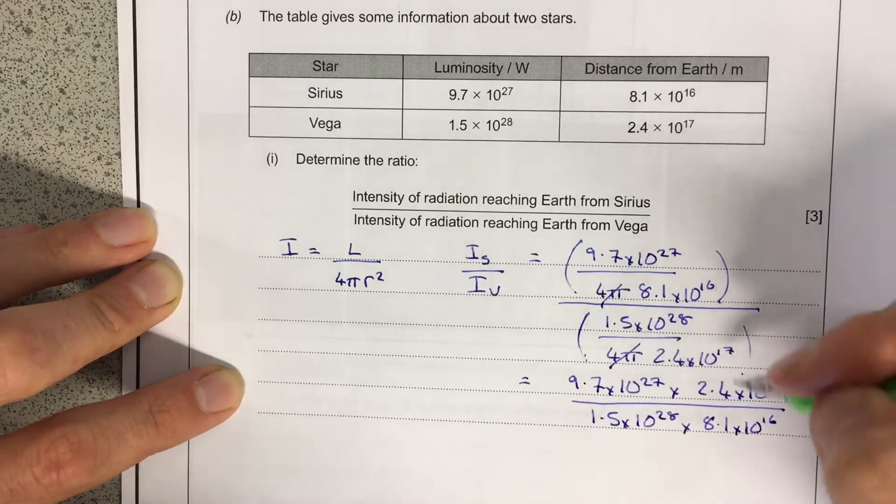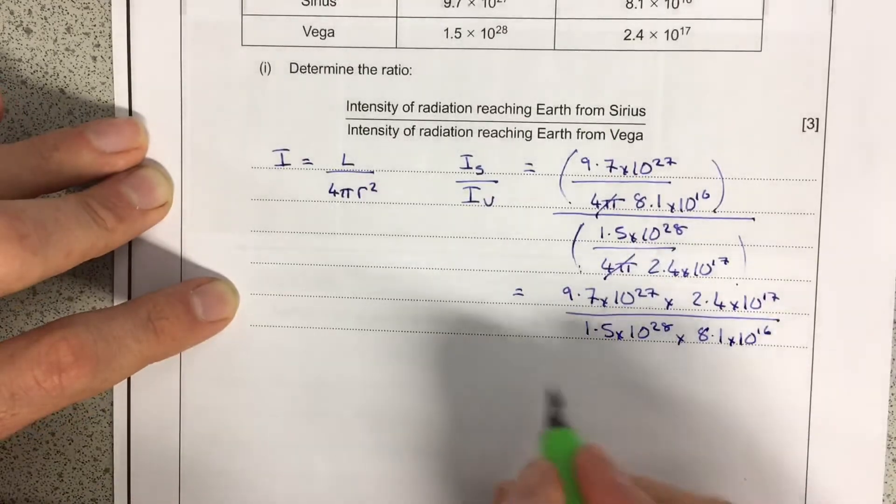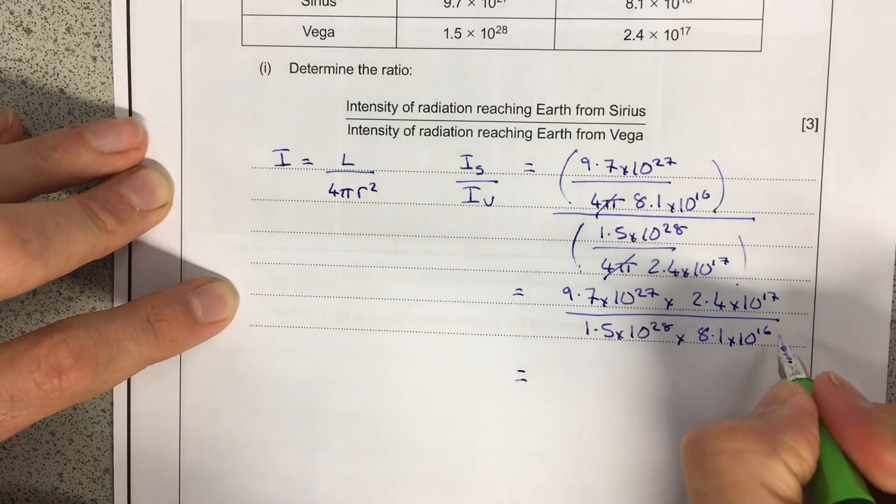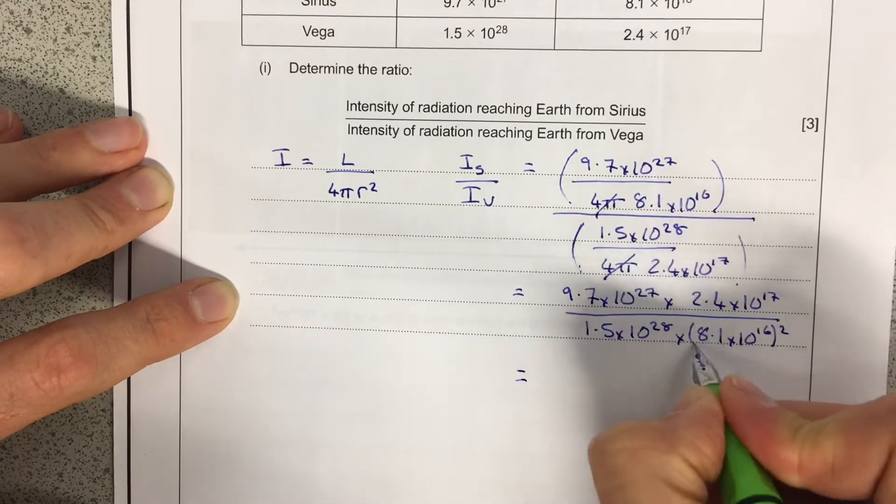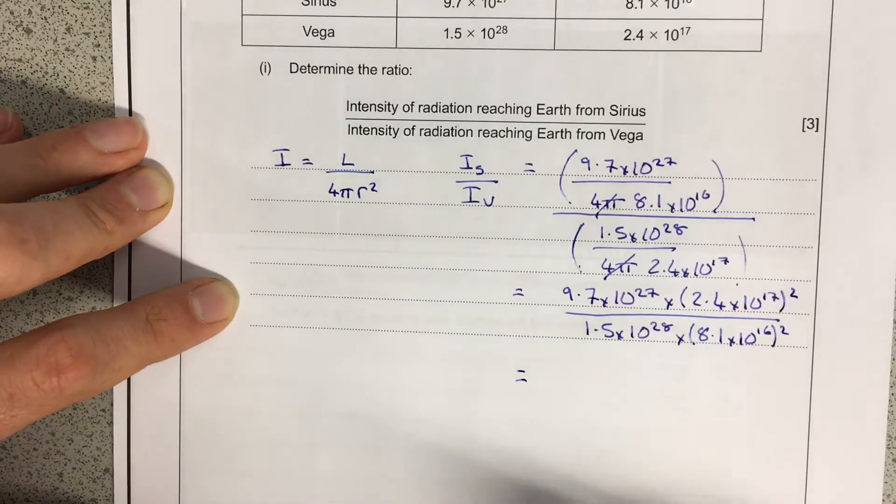So this is just the fractional work that you might have learned in maths, which is great. And then if you then calculate what those values are, you should get... Sorry, I've forgotten to square my R's. This is one of my favourite mistakes here, is squaring these R's here. So they need squaring in there.